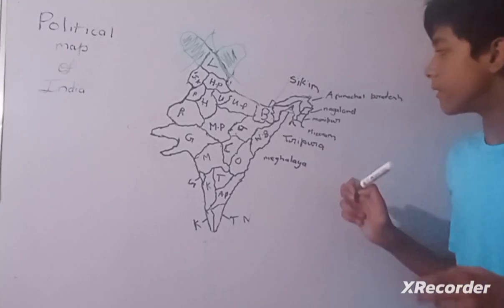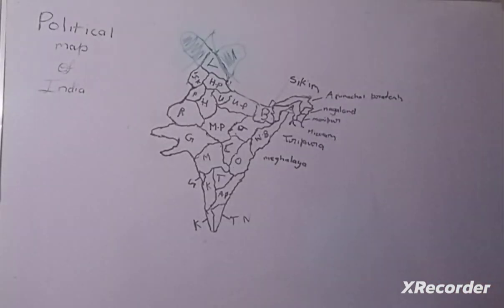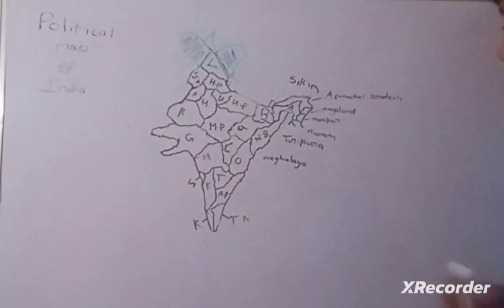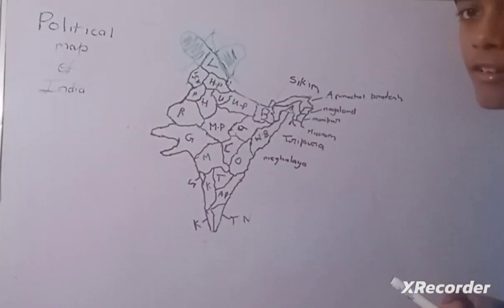Meghalaya receives the most rainfall in the world in a year. And seven sisters, most of the bamboo is grown in seven sisters.